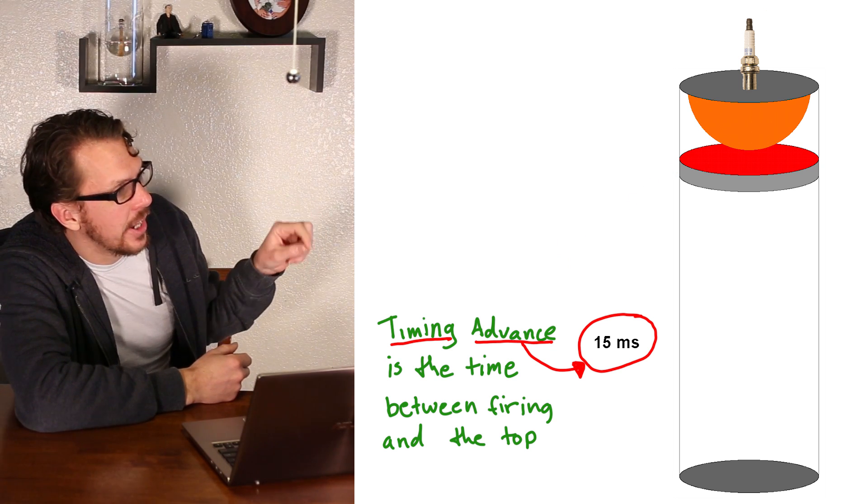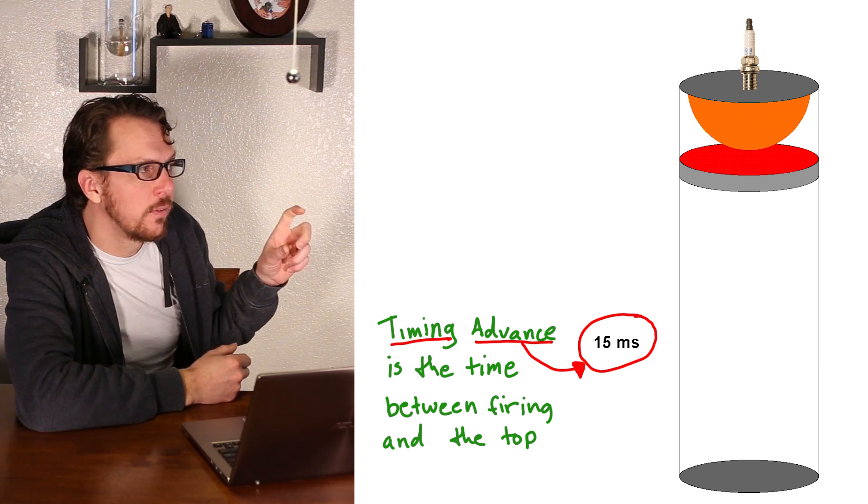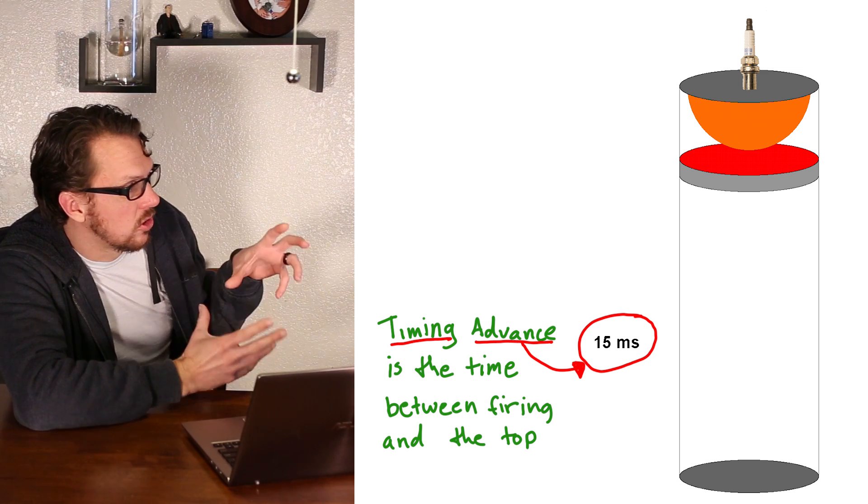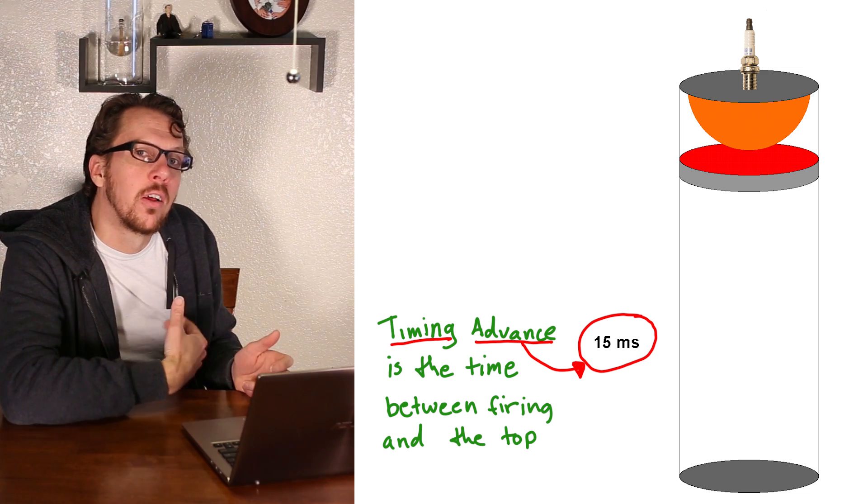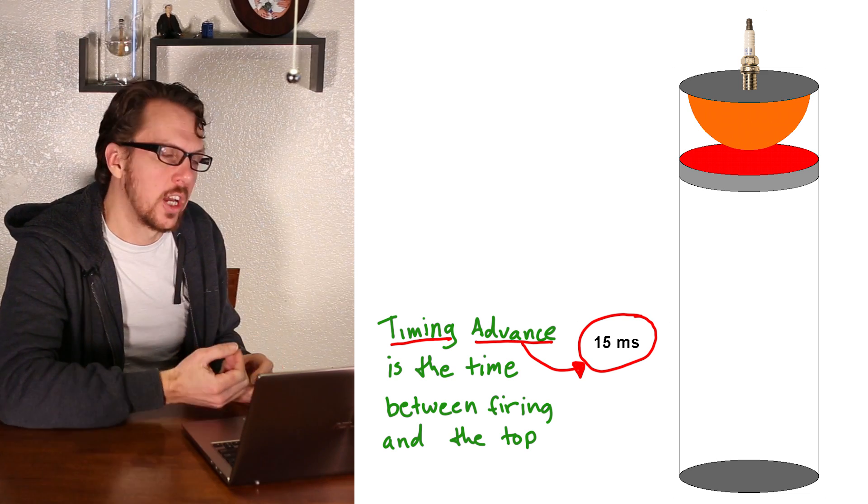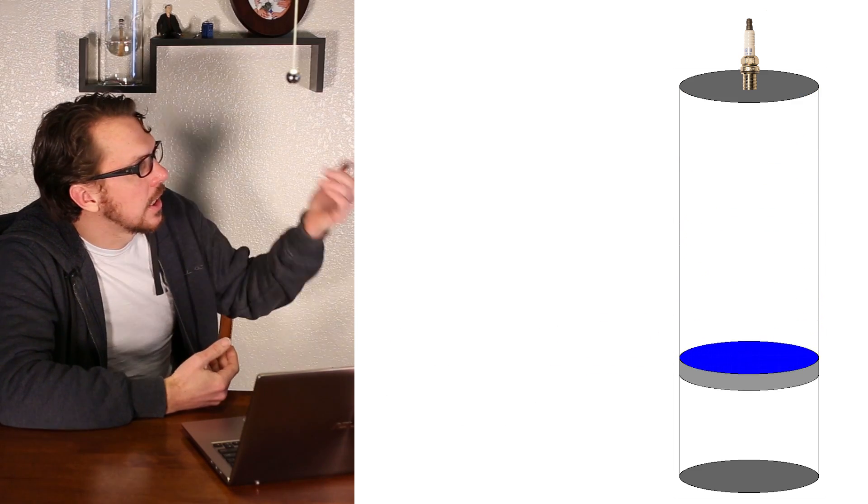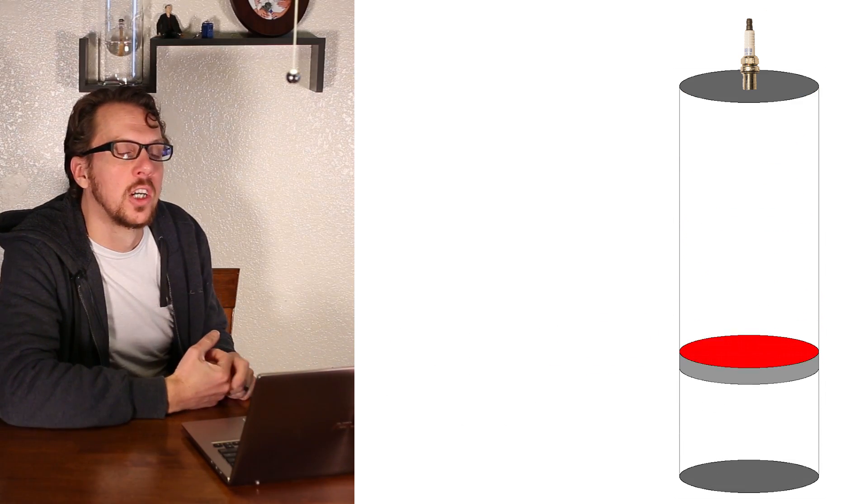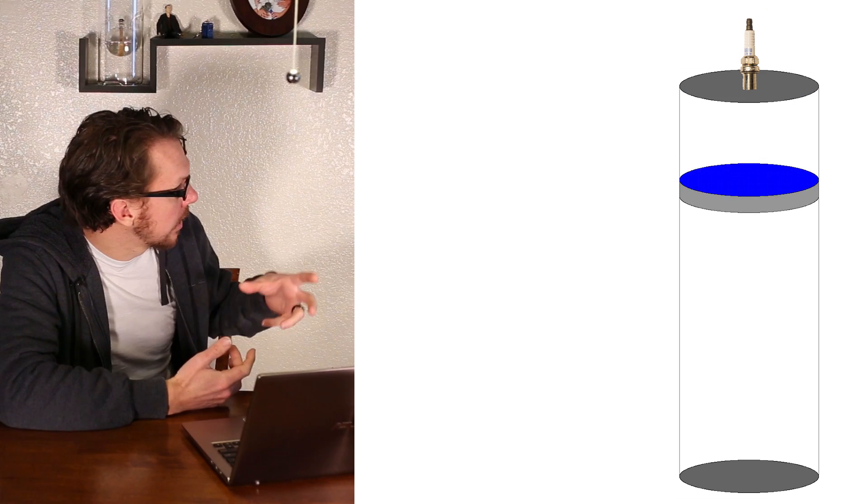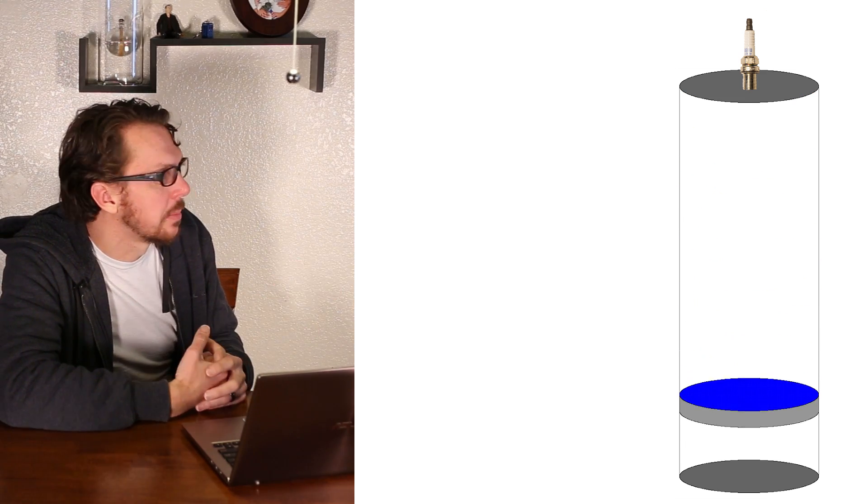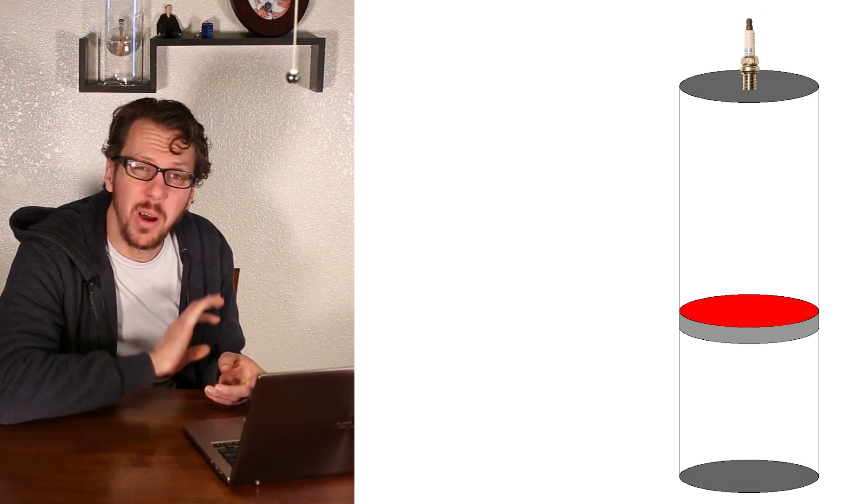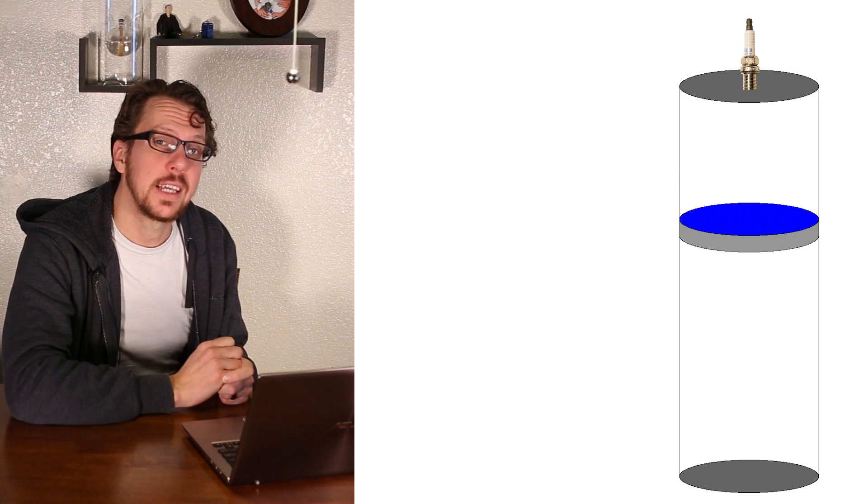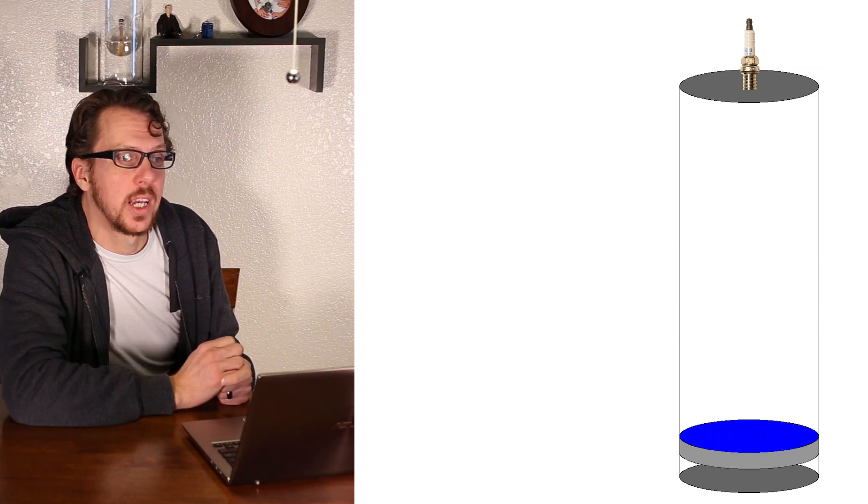Now that time that it takes between firing and the top of the cylinder, that's the ignition timing. And you want your ignition timing suitably advanced so that it fires early enough that the flames reach their peak at the top. However, if you have lower octane gas, a problem can happen. Lower octane gas actually burns easier.